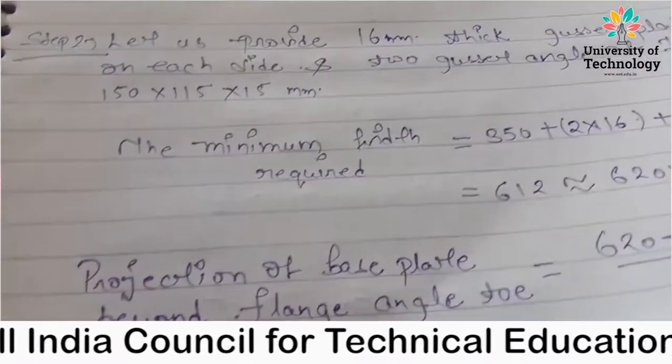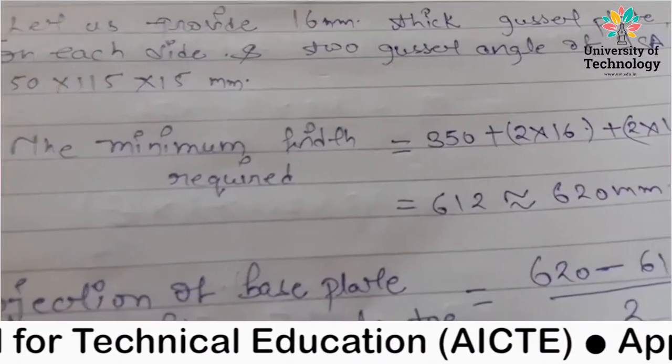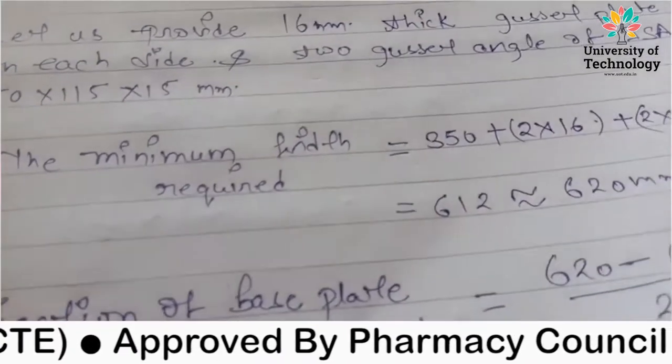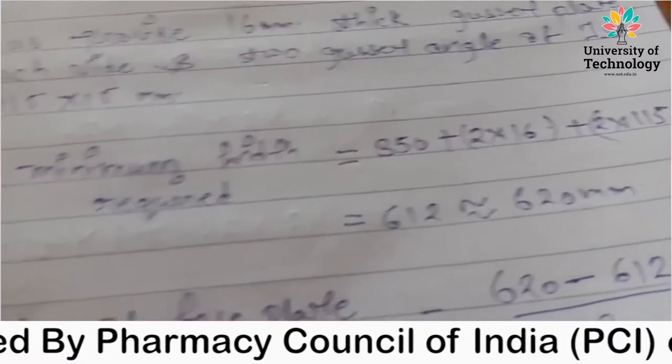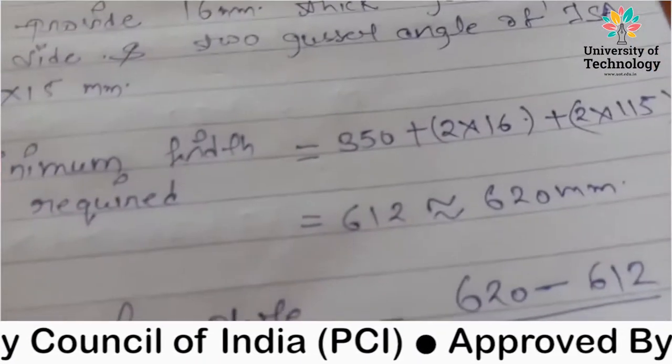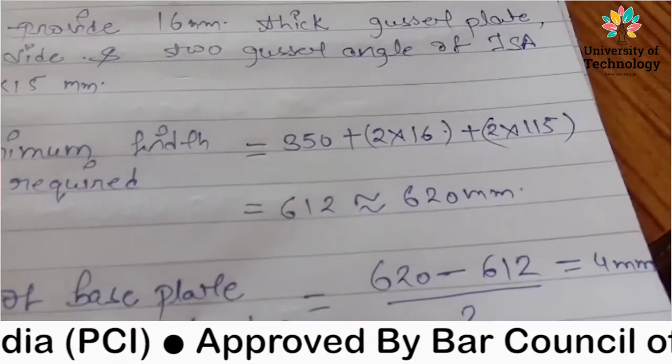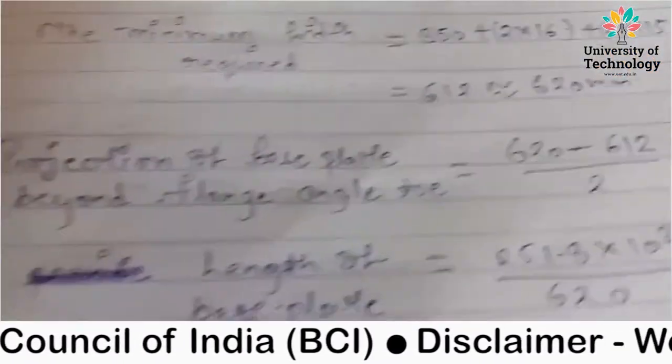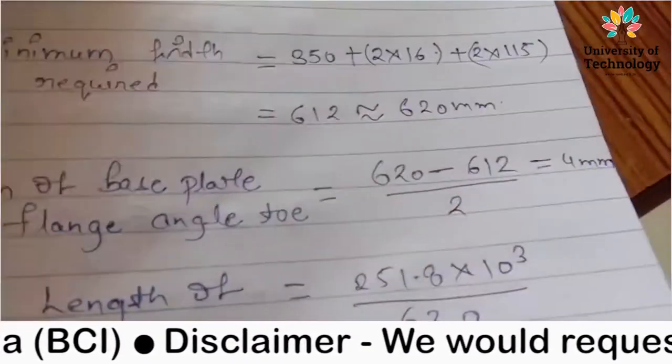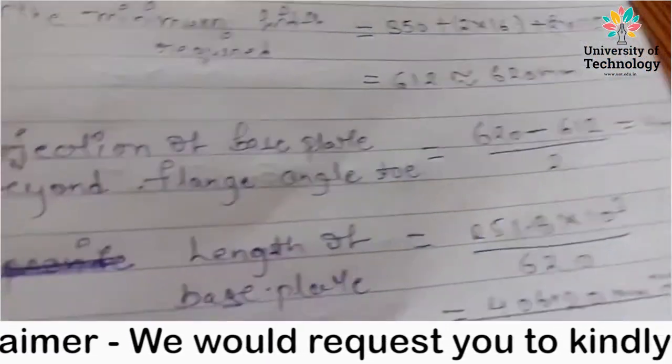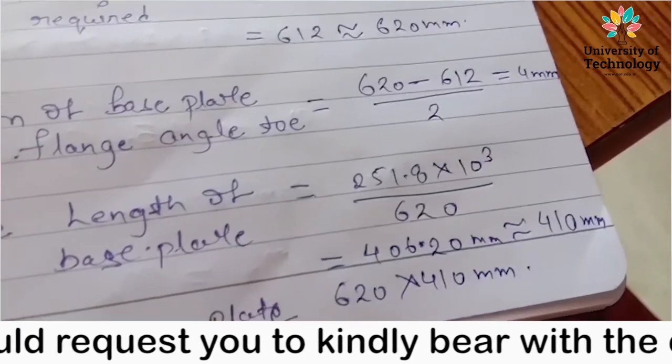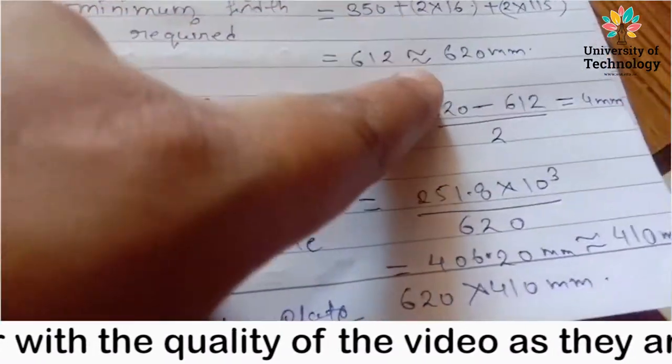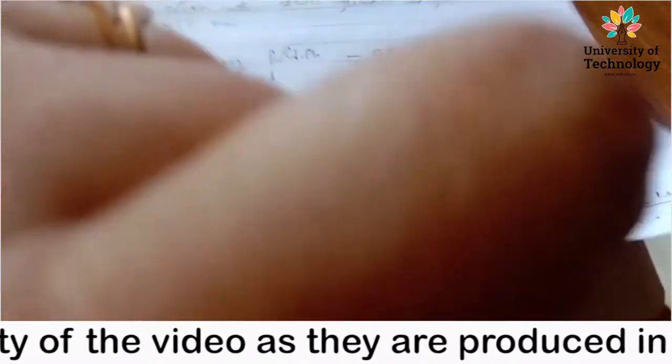Next, projection of base plate beyond flange toe. When you put the whole section with the base plate, we have to remove that part. We have to assume that actual minus assumed upon 2, then the value is 4mm. Now provide 620 into 410. This is our new area.